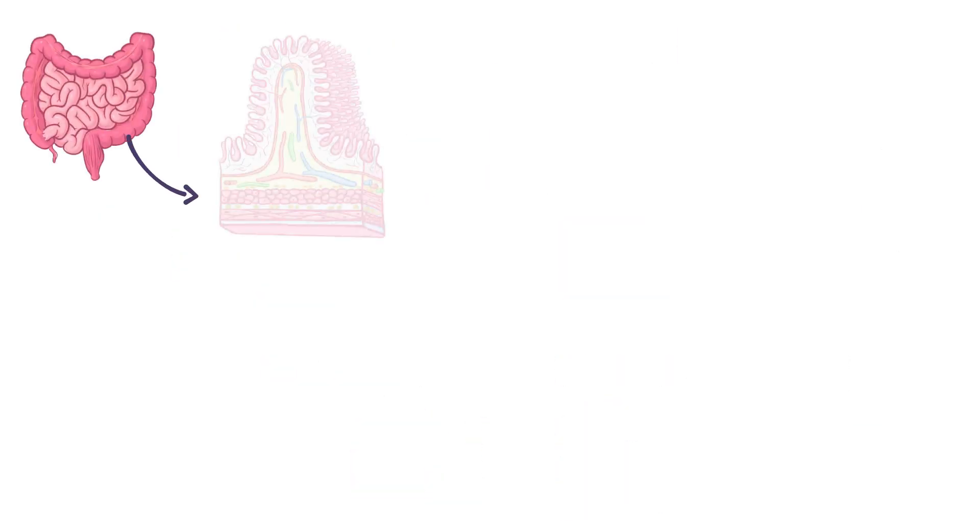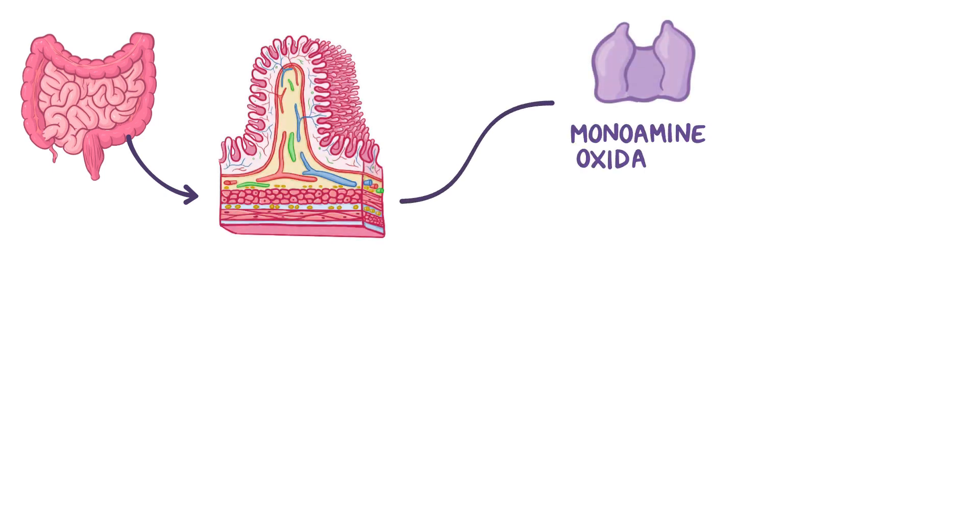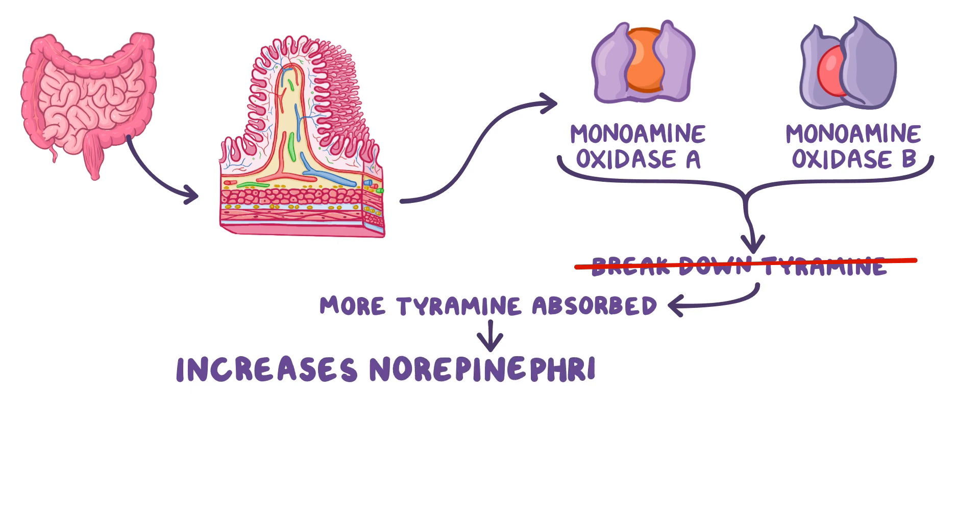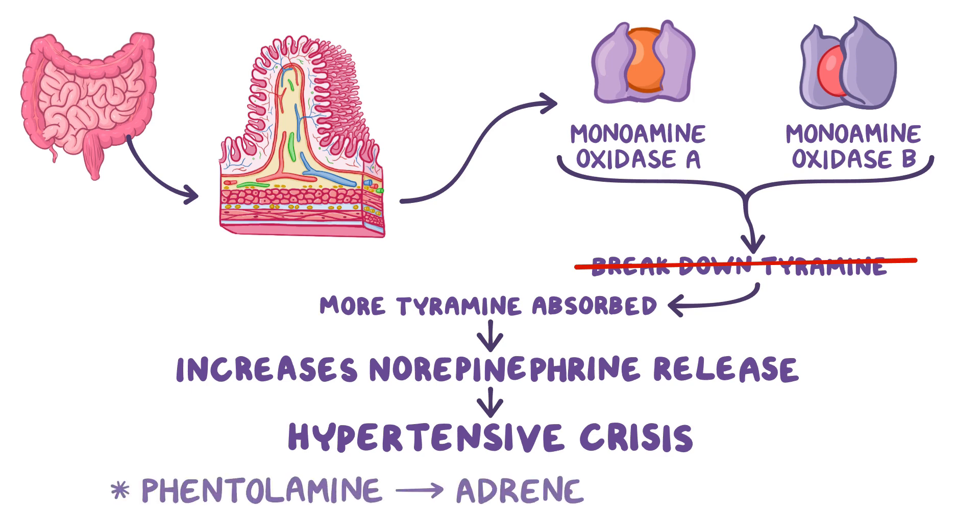Normally, within the cells of the gut wall, both monoamine oxidase A and monoamine oxidase B break down tyramine. But when they're inhibited, more tyramine is absorbed. Higher concentration of tyramine increases norepinephrine release, which leads to hypertensive crisis. Treatment of this condition consists of administration of phentolamine, which is an adrenergic antagonist that blocks norepinephrine receptors.